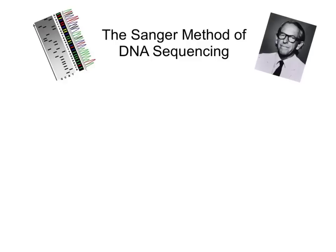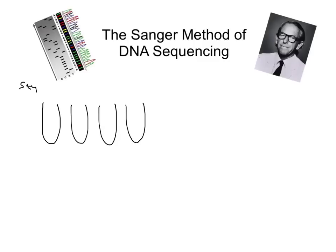There is something known as cycle sequencing, which is a kind of modified version of the Sanger method, which I'll look at at the end of this video. So let's look at the process of Sanger sequencing, or sometimes called chain termination sequencing. So the first thing to do is we're going to have four test tubes: one, two, three, four. So this is step one.